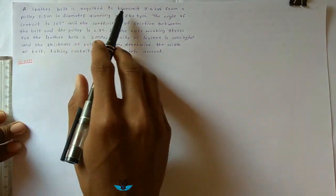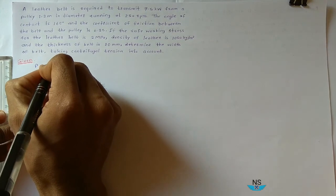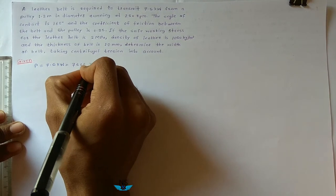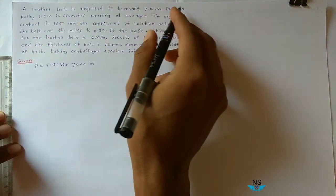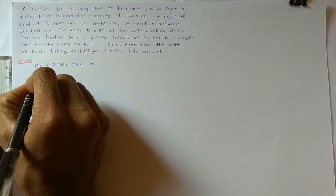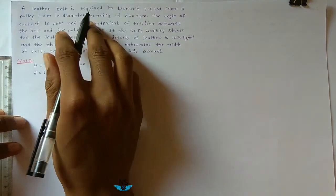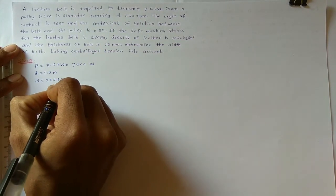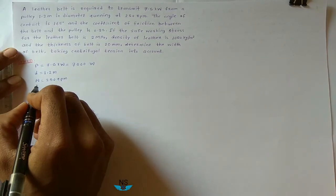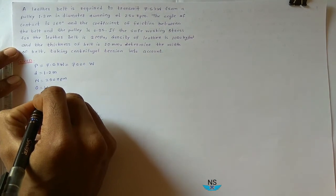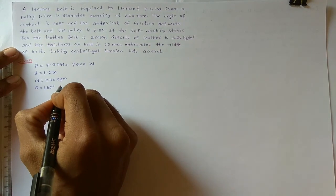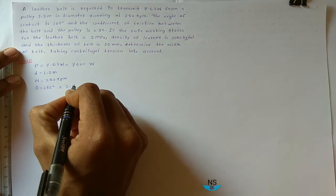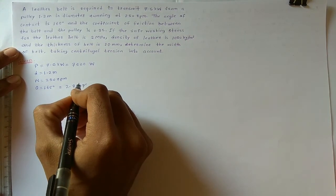What is given? A leather belt is required to transmit 7.5 kW, so power P is 7500 Watts. The diameter of pulley d is 1.2 meter, running at speed n equal to 250 rpm. The angle of contact theta is equal to 165 degrees, which in radians is multiplied by pi over 180, giving 2.8797 radians.